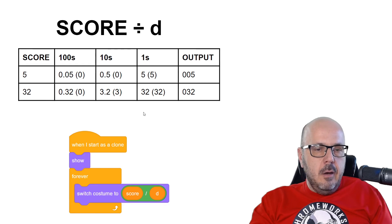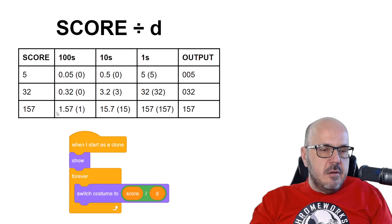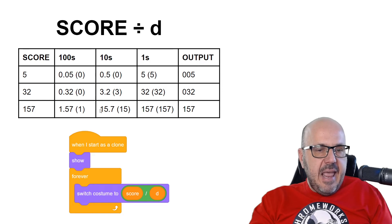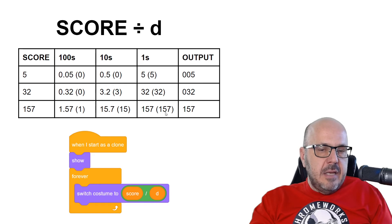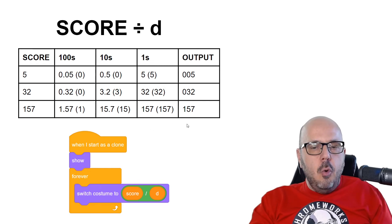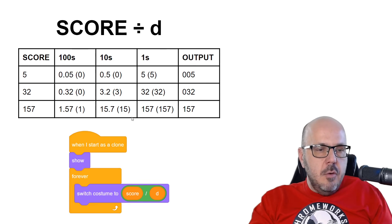Let's try one more with 157: 157÷100=1.57, floor is 1; 157÷10=15.7, floor is 15 — it goes around once and stops at five, output 5; 157÷1=157 — ignores the first two digits, outputs 7. Final output: 157. So no matter what the score is, the output will always match, with zeros filled in automatically. We no longer need if-statements to handle leading zeros, and we can expand to as many digits as we want.